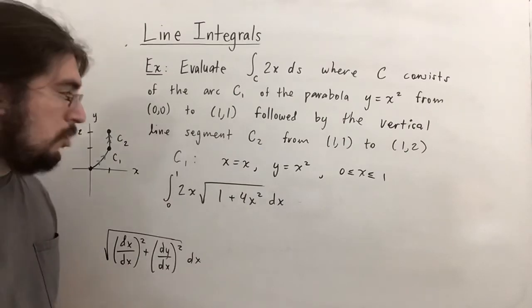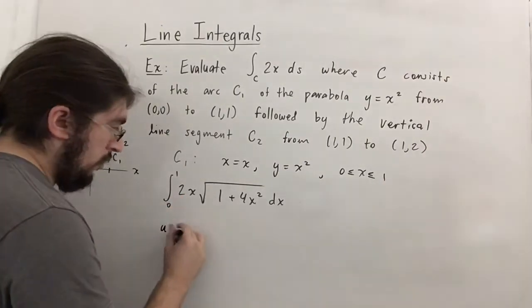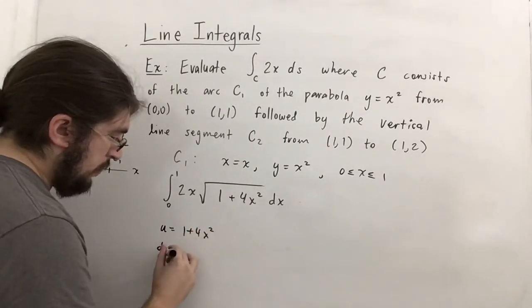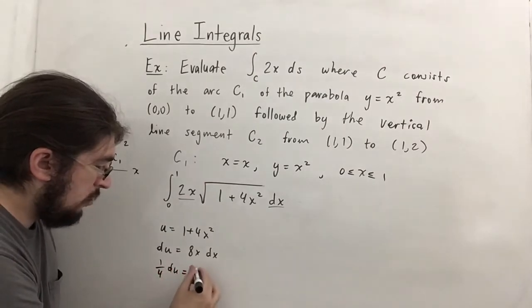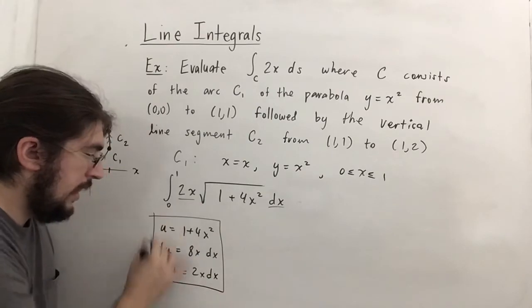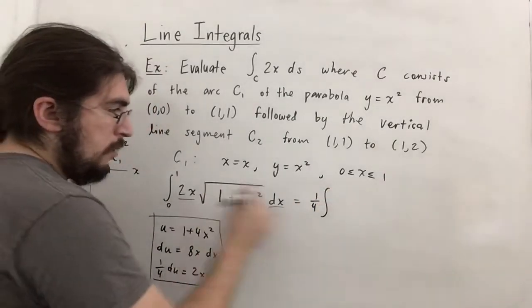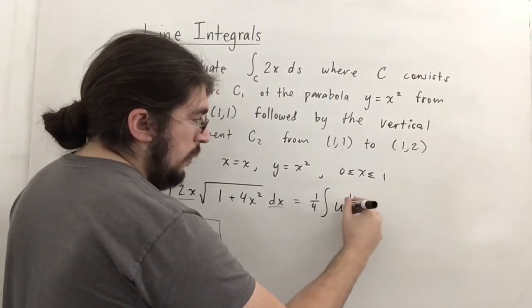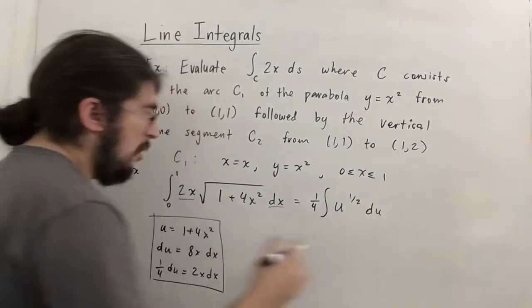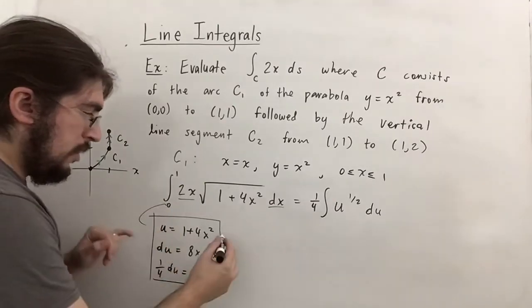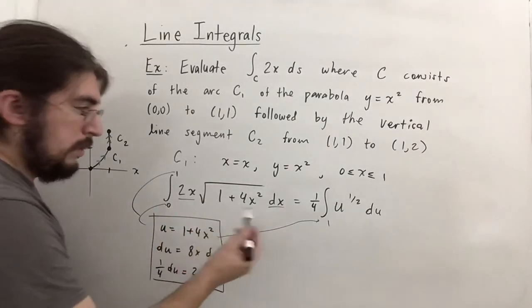This is a u-substitution: let u equal 1 plus 4x squared, so du equals 8x dx, meaning one-fourth du equals 2x dx. When x equals 0, u equals 1; when x equals 1, u equals 5. The integral becomes one-fourth times the integral from 1 to 5 of u to the one-half du. The antiderivative is one-fourth times two-thirds u to the three-halves, which simplifies to one-sixth u to the three-halves, evaluated between 1 and 5.